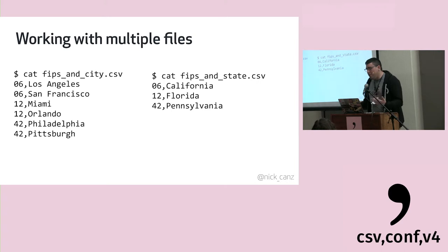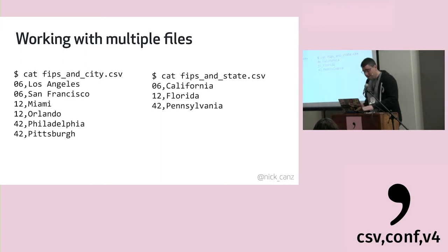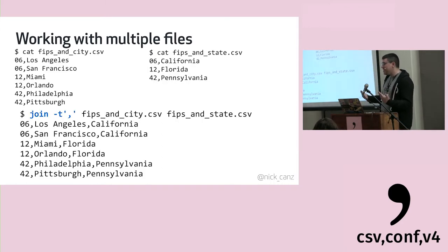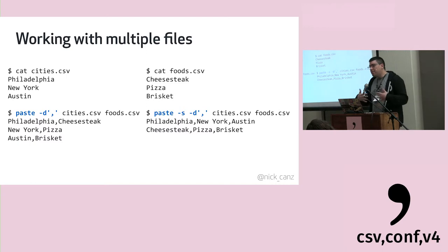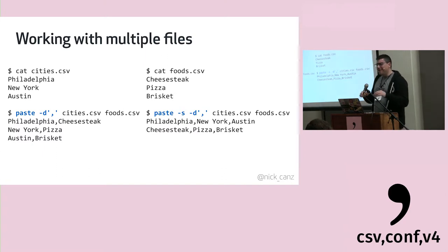Eventually you'll have to work with multiple files. If you have a file with a state FIPS code and city name, and another with the FIPS code and state name, and you want city name and state name together, there's a 'join' command that works pretty much like a SQL join — useful when you have identifier columns. 'paste' is another option — it zips two files together when you don't have an ID column to join on. With the -s option it transposes rows and columns, and is generally useful only for specific output formats.